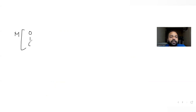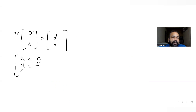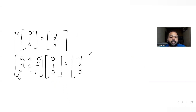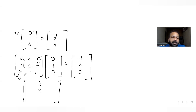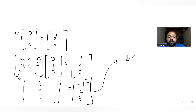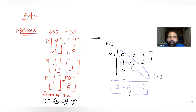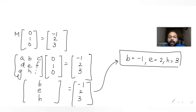Applying the first condition: M × [0, 1, 0]ᵀ = [-1, 2, 3]ᵀ. Multiplying out, the first row gives b, the second row gives e, and the third row gives h. By direct comparison: b = -1, e = 2, and h = 3. So we already have e = 2 for our diagonal sum.